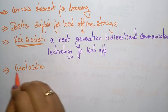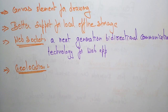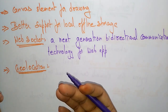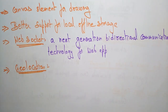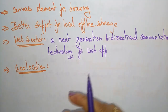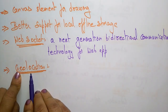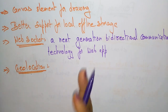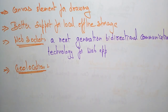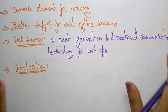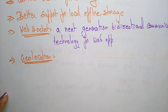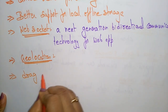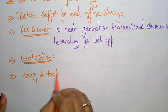The next feature in HTML5 is the geolocation element. Nowadays everyone is using this element. With geolocation, visitors can choose to share their physical location with your web application. Using this geolocation element, you can share where exactly you are located — for example, with the help of Google Maps.